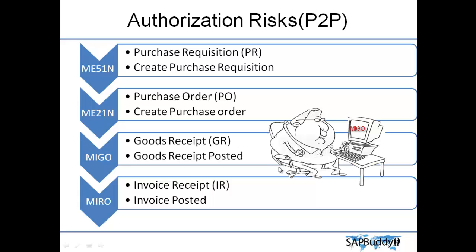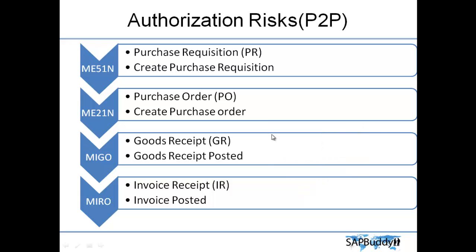But the goods are still not there in the store. The invoice is verified, and then they go to F110 and execute the payment run. So the particular bank or vendor which was created already got the money in the bank, but you don't have any goods inside the company. In this full cycle, without having any goods inside the company, you can easily make a big transaction if you have all this authorization with one person.